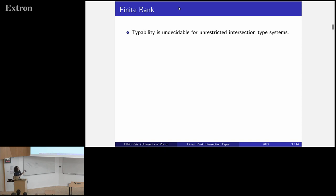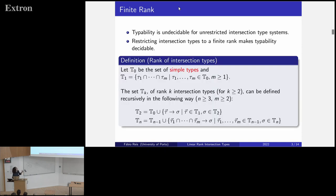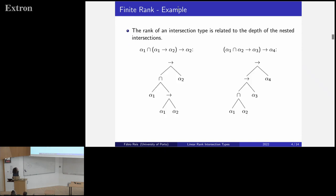The problem for us, since we want a type inference algorithm, is that typability is undecidable if we don't restrict these intersection types, because they characterize termination. Restrictions can be made — for instance, finite rank intersection types introduced by Leivant. The rank zero types are the simple types, T1 is intersections of simple types, and for rank 2 we have either simple types or a functional type with intersections of simple types on the left and a rank 2 type on the right, generalized accordingly.